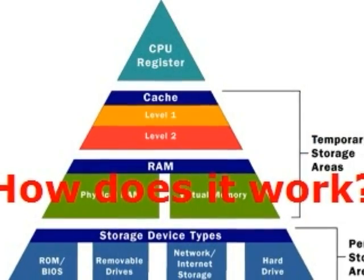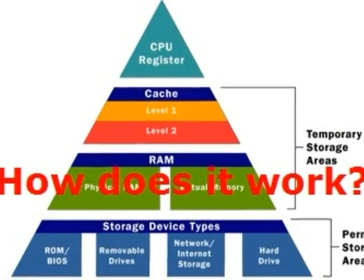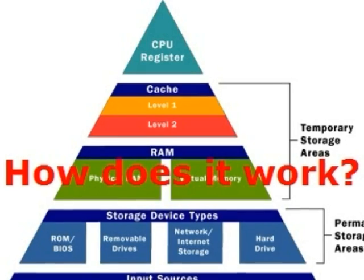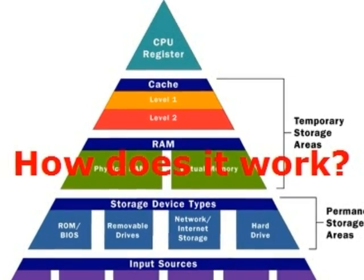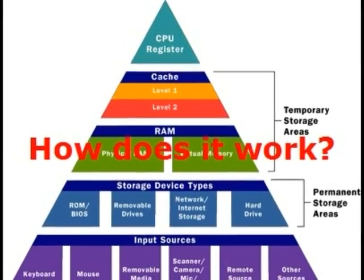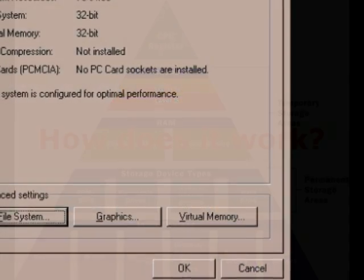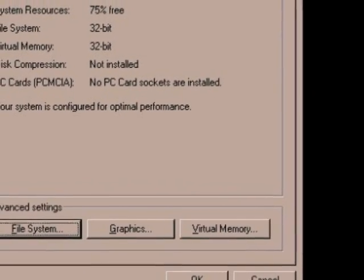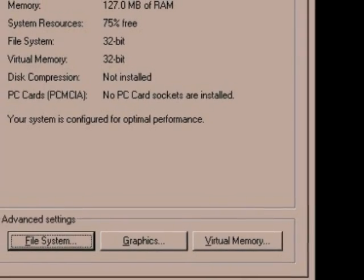With virtual memory, what the computer can do is look at RAM for areas that have not been used recently and copy them onto the hard disk. This frees up space in RAM to load the new application. Windows 98 is an example of a typical operating system that has virtual memory.